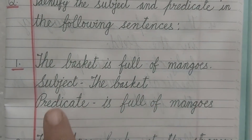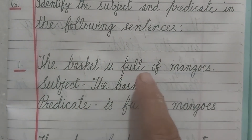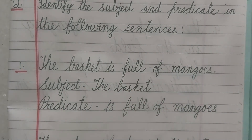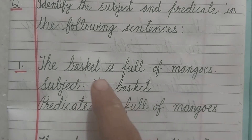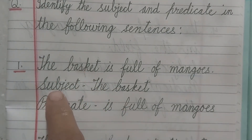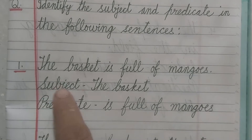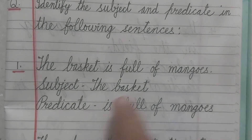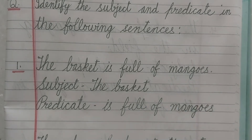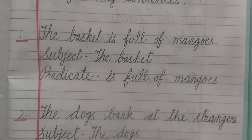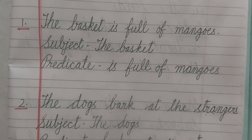The first sentence is: the basket is full of mangoes. So in this sentence, what are we talking about? We are talking about basket. So subject is 'the basket' and the rest part 'is full of mangoes' is the predicate. You have to ask one question only: what are we talking about, or whom are we talking about?